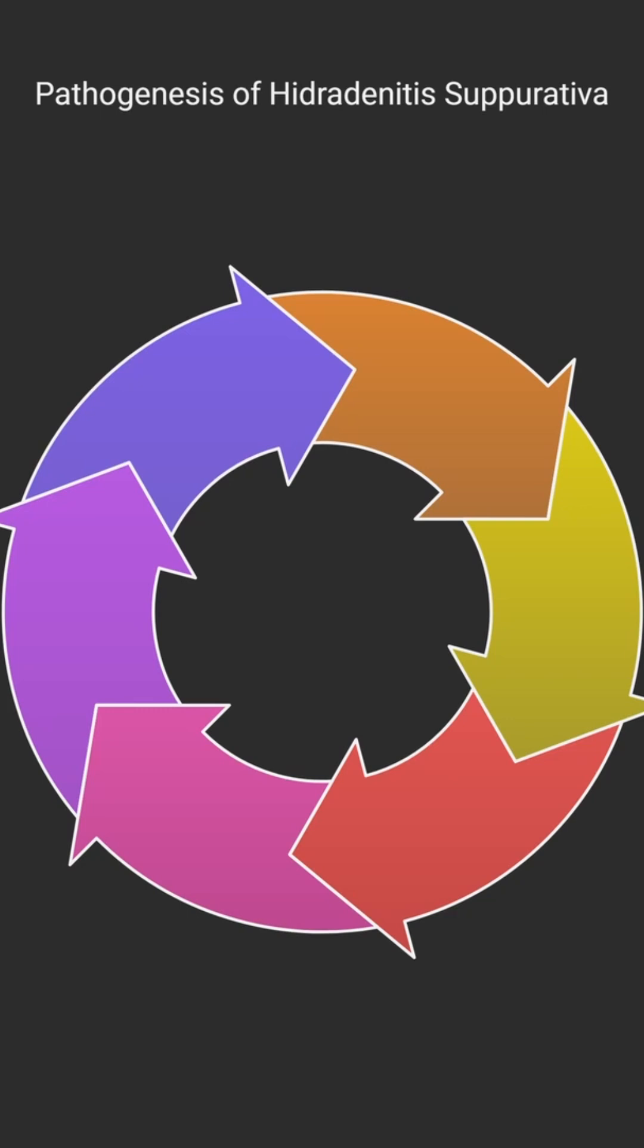Plus, they've found autoantibodies attacking the body's own stuff, targeting proteins found in these nets in HS patients. It really looks like a self-perpetuating cycle.